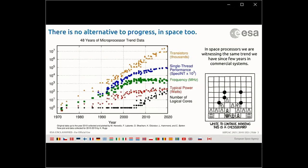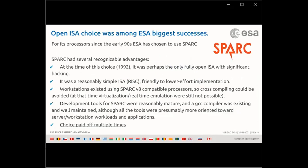Meanwhile the game is changing. We used to have a very centralized system with only one processor; we are going towards systems with distributed intelligence thanks to the ubiquitous use of FPGAs and processors. We see the need for more onboard processing driven by autonomy and auto-coding. And we're talking about open ISA — ESA's choice was among the biggest successes in the era of data handling in the space domain.